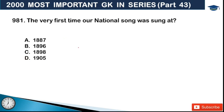Next: the very first time our national song Vande Mataram was sung - options are 1887, 1896, 1898, and 1905. The answer is 1896, at the INC session. In 1905, the Bengal Partition occurred, and after that the Swadeshi movement and Bengal anti-partition movement started. At that time our national song Vande Mataram became very famous among the people.